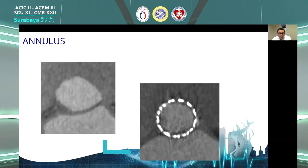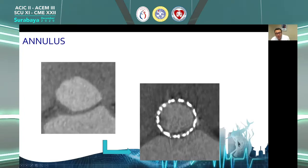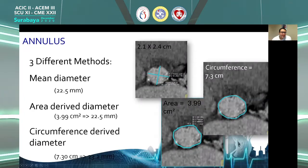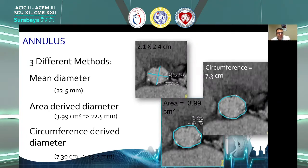After adjusting the annular plane, we mathematically size the annulus to decide on the prosthesis to be implanted. The annulus is usually an oval structure that becomes circular after implantation, unless the anatomy is extremely calcified. There are three different ways of measuring the annulus. The first is the mean diameter: you measure the short dimension and long dimension and calculate the mean, assuming the mean diameter of the native annulus remains the same after implantation — the prosthesis should match this mean diameter.